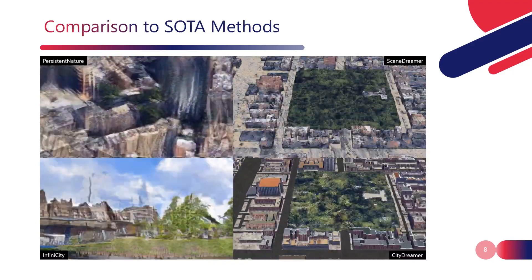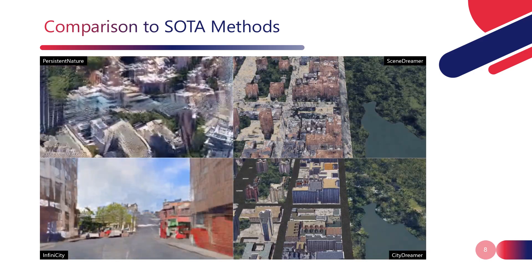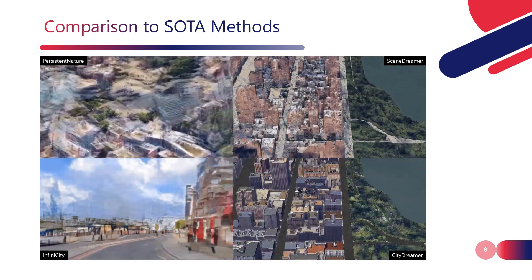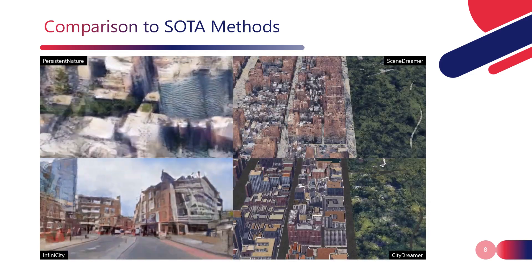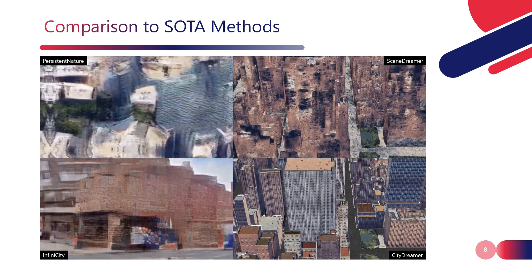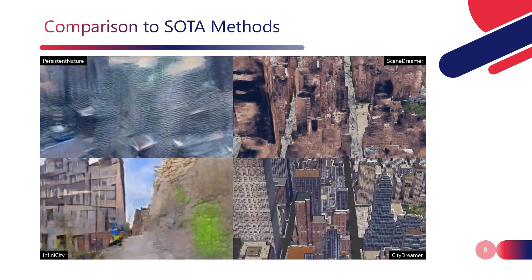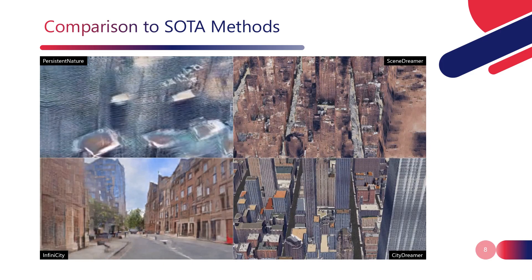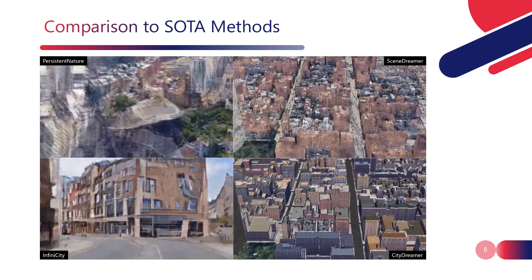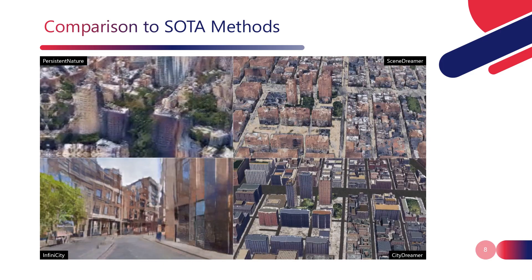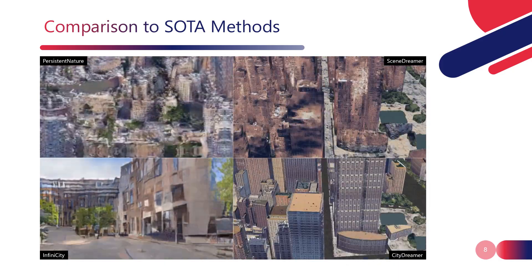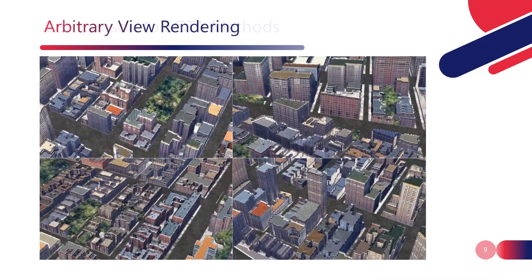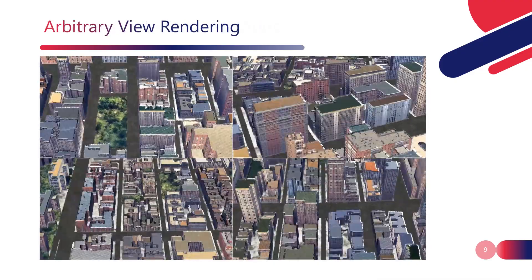Here, we show the comparison results to the state-of-the-art methods, including Persistent Nature, Infinite City, and SceneDreamer. The experimental results demonstrate that CityDreamer produces cities of significantly superior quality compared to the other methods. We also show the robustness of CityDreamer by rendering the cities from various perspectives.